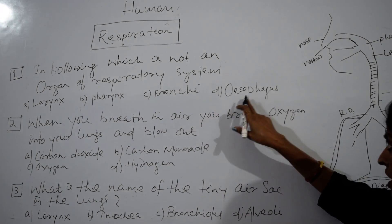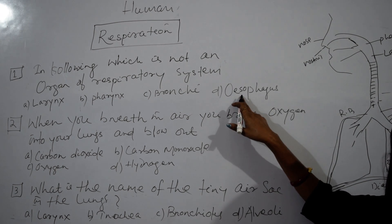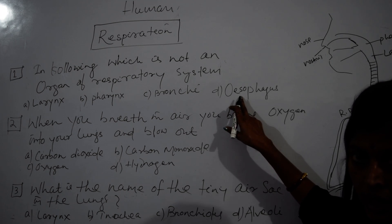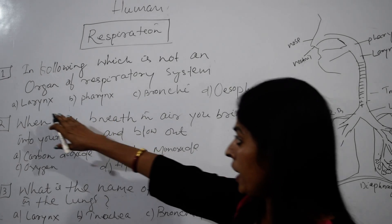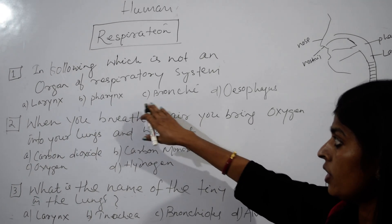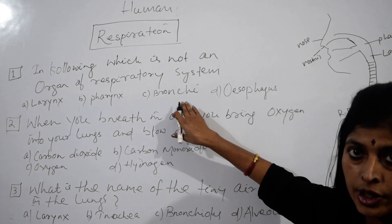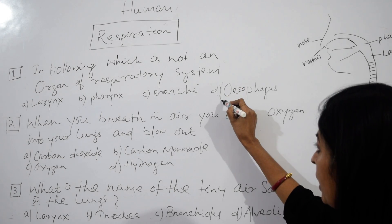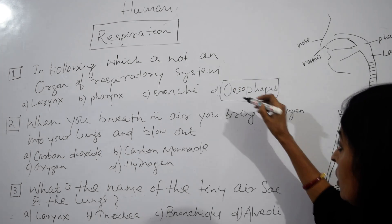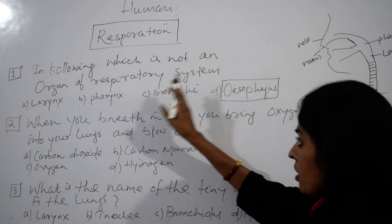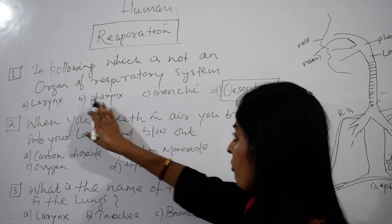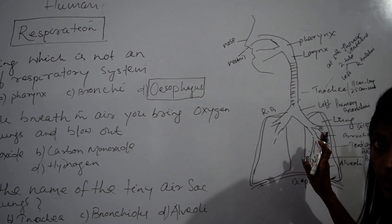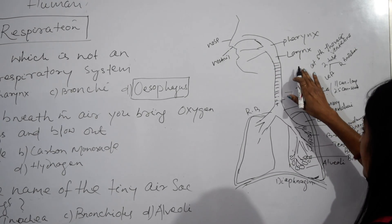The fourth one, esophagus, is part of the digestive system. Larynx, pharynx, and bronchitis are all part of the respiratory system. So the right answer is esophagus.